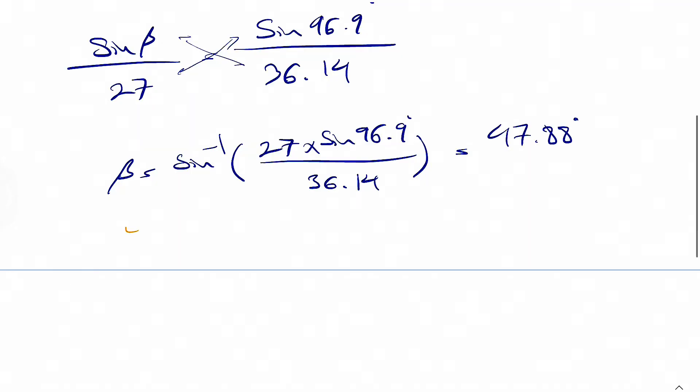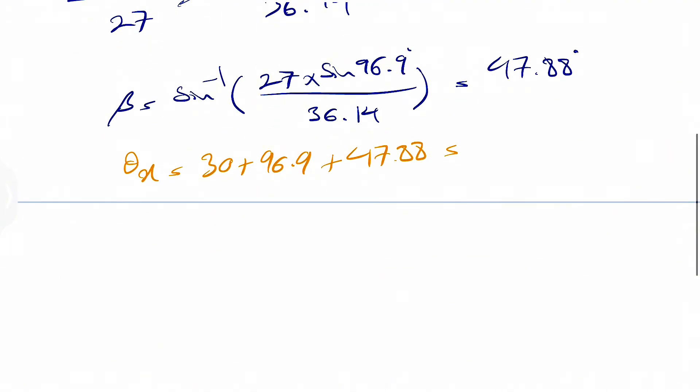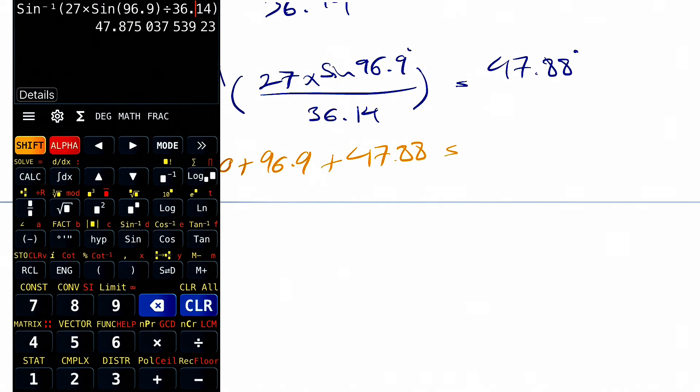So theta x in here is 30 plus 96.9 plus 47.88. Let's see what we get.